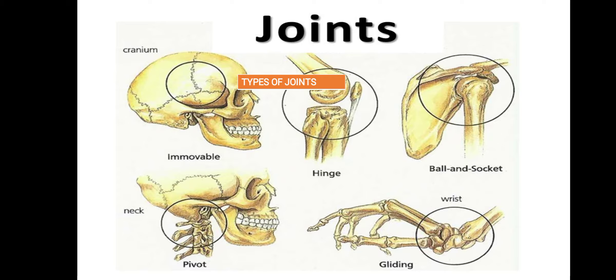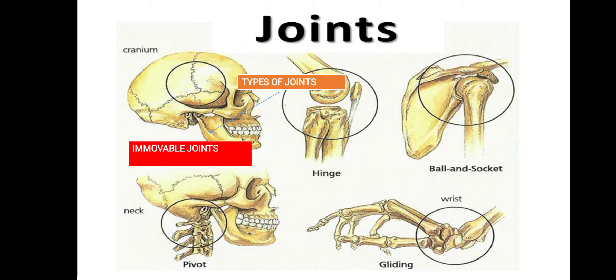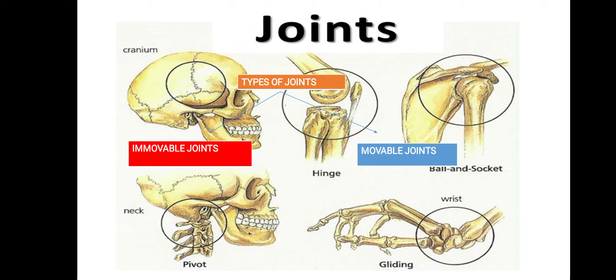Now let's talk about the types of joints. There are two types of joints: immovable joints and movable joints.